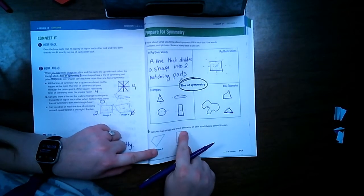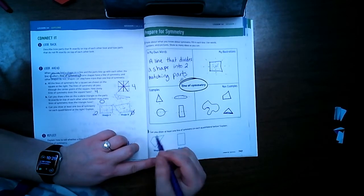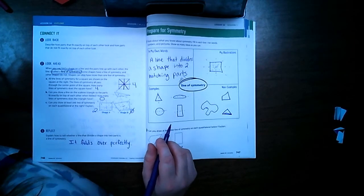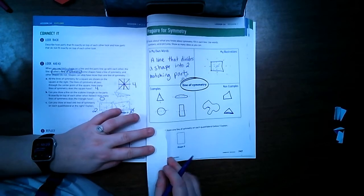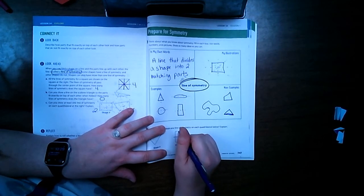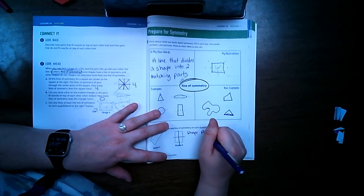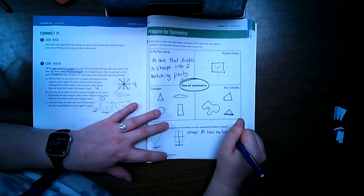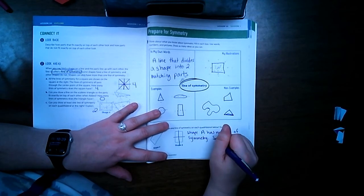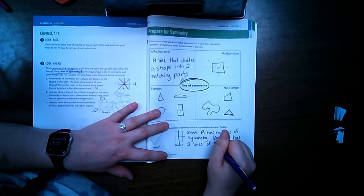Number two, can you draw at least one line of symmetry on each quadrilateral below? Okay. This one, I don't think there's any way that we could take that and fold it over. If you're not sure, you can again take a piece of paper and draw over it and cut it out and check. But on shape B, we can draw one here or there. So shape A has no lines of symmetry. Shape B has two lines of symmetry.